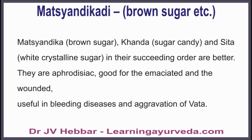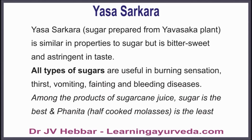Machandika or brown sugar, Khanda or sugar candy, and Sita — white crystalline sugar — are better in their succeeding order, meaning white sugar is the best. They are good for the emaciated and the wounded, cure bleeding diseases, and aggravation of vata. Yasa Shakara, sugar prepared from a herb called Yavasaka, is similar in properties to sugar but is bitter, sweet, and astringent in taste. All types of sugar are useful in burning sensation, thirst, vomiting, fainting, and bleeding disorders. Among the products of sugar cane, sugar is the best and Fanita is the least preferred.